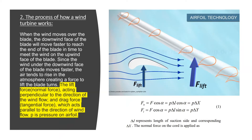The second topic is the process of how a wind turbine works. When wind moves over the blade, the downwind face of the blade moves faster to meet the end of the blade in time to meet the wind on the upwind face. Since the wind under the downwind face moves faster, the air tends to rise in the atmosphere, creating a lift force that makes the blade turn.